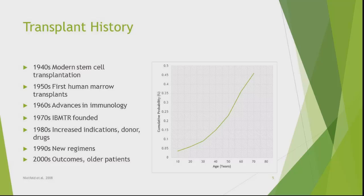Now that you understand histocompatibility and have a repository, what's next? You start getting more indications for transplant, more drugs, more understanding of donors, and creating larger donor pools — not only through European registries but also a North American marrow donor pool. By the 1990s, there were new regimens. Peripheral blood stem cells became another potential source alongside bone marrow. And if you're going to use peripheral blood stem cells, you need something to stimulate them — that's where granulocyte colony-stimulating factor, also known as Neupogen, came into being.